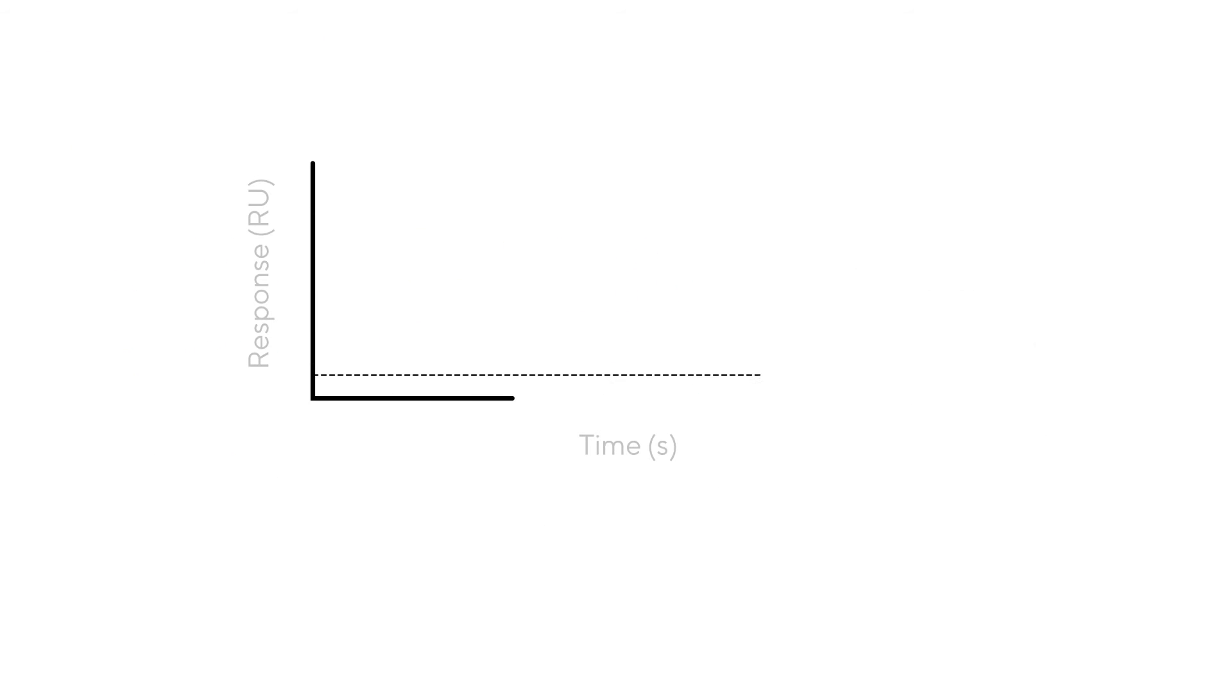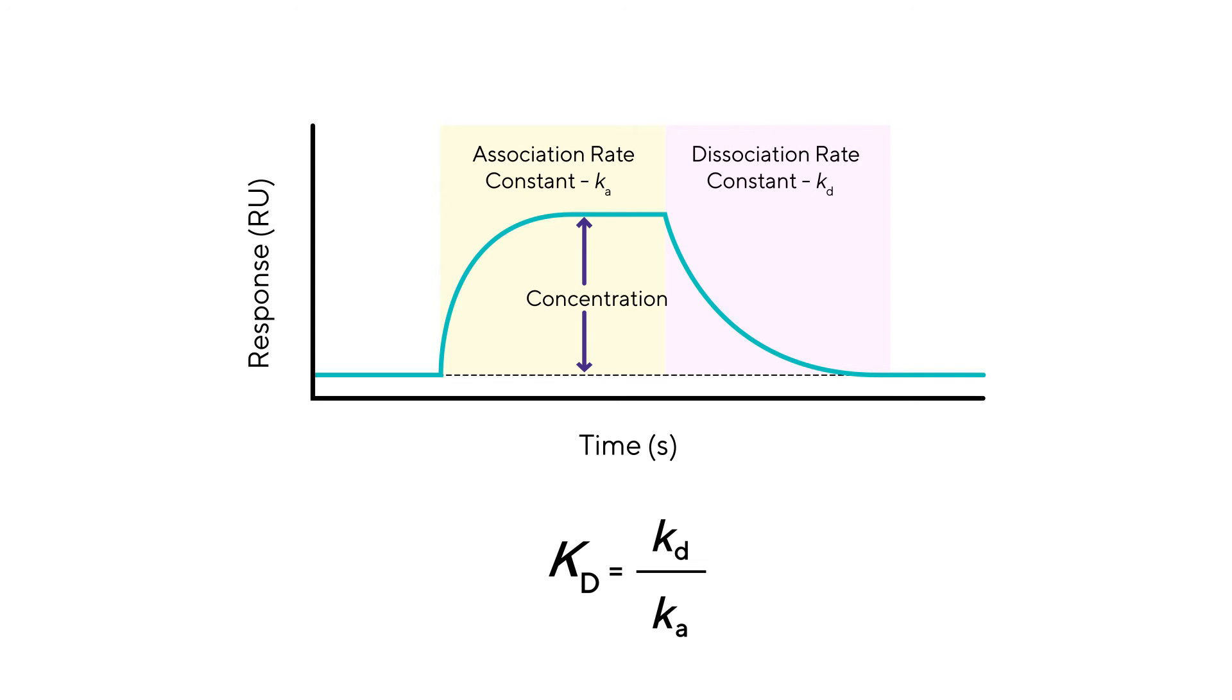The interference pattern of this shift is monitored and plotted in the sensorgram in real time. This real-time analysis provides precise and accurate data on binding specificities, analyte concentrations, and rates of association and dissociation.